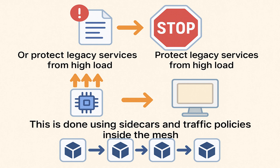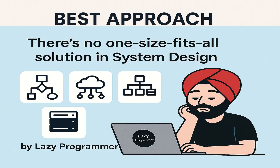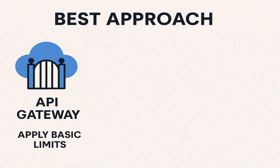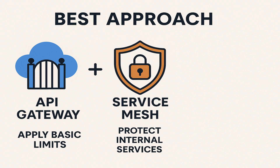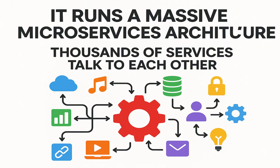So what is the best approach? As I said, there is no one-size-fits-all solution. A common real-world setup combines multiple layers: apply basic limits at the API gateway, use service mesh to protect internal services, and add custom logic in applications where needed. Now let's look at a real-world example. We all know Netflix — it runs on a massive microservices architecture with thousands of services talking to each other, and traffic spikes are very normal.